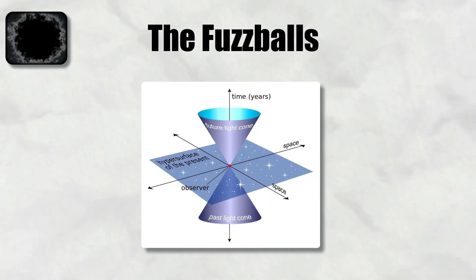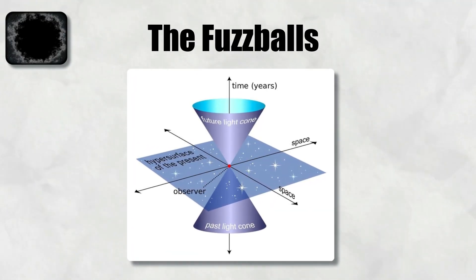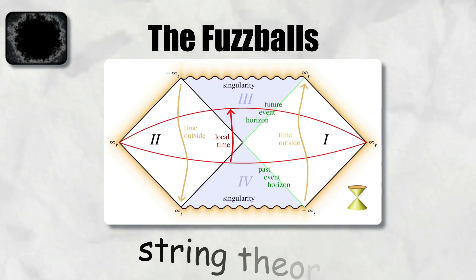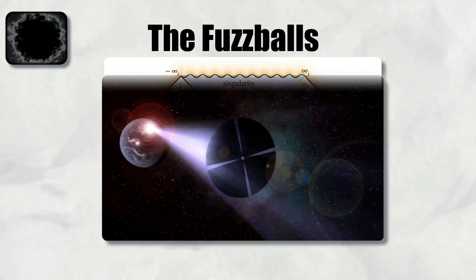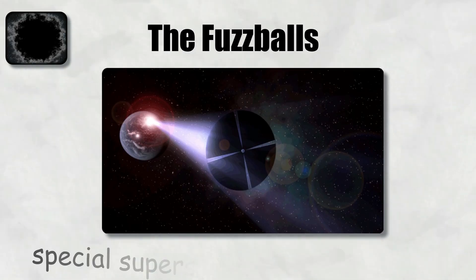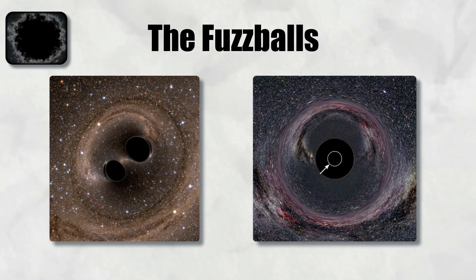One striking implication is that an infalling observer would not experience the smooth passage through an event horizon that general relativity predicts. Instead, the observer would encounter quantum structure immediately at the horizon scale, similar in spirit to the firewall idea but motivated by string theory. A major challenge is that explicit fuzzball solutions have only been constructed for special supersymmetric black holes, not for astrophysical ones like those seen by LIGO or the Event Horizon Telescope. Testing the fuzzball idea requires extending string theory techniques to more realistic cases.